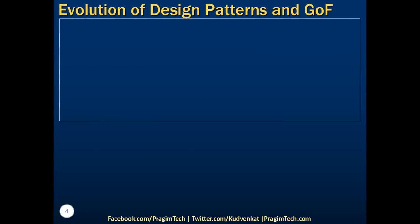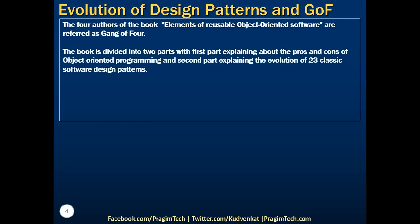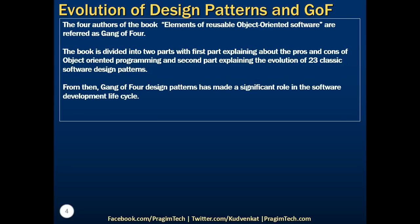Let's talk about the history and evolution of design patterns. The four authors of the book, famously known as Gang of Four, are the ones who brought the concepts of design patterns in their book, Elements of Reusable Object-Oriented Software. Gang of Four divided the book into two parts, with the first part explaining the pros and cons of object-oriented programming, and the second part describing the evolution of 23 classic software design patterns. Gang of Four design patterns has made a significant role in the software development life cycle. The first publication date of the book was during the end of 1994. For more details, please refer to the listed Wikipedia article below.